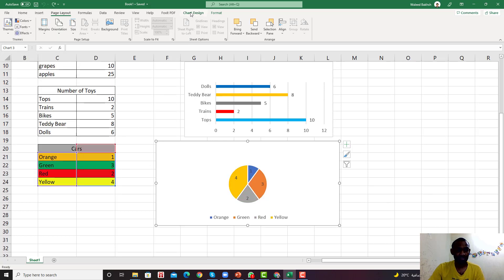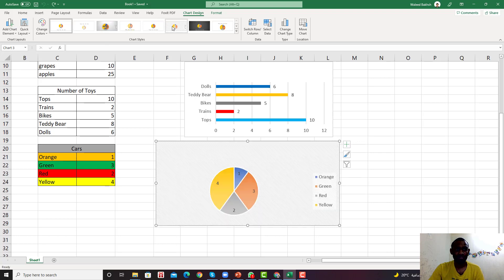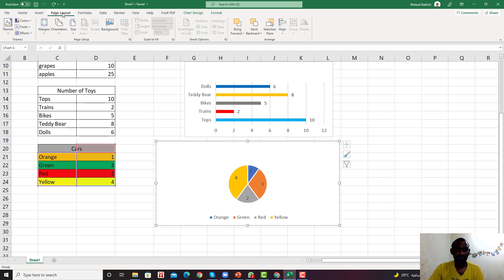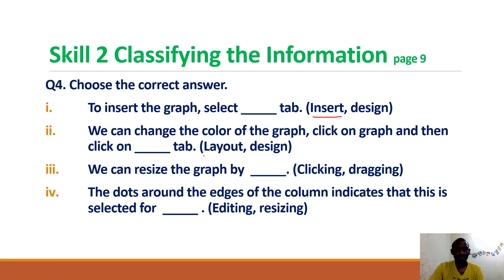From Chart Design you can change the style but not the color. The correct answer is Page Layout. So the correct answer is Layout — Page Layout is the answer.